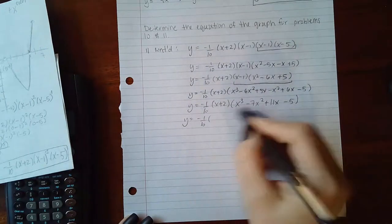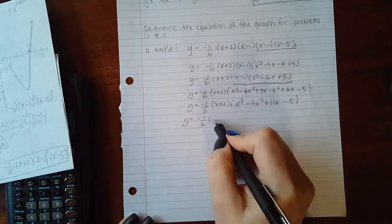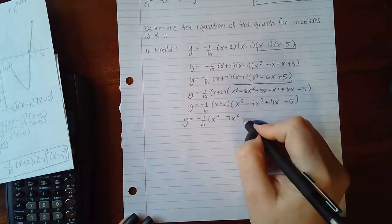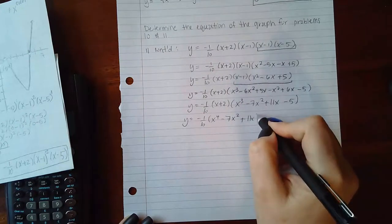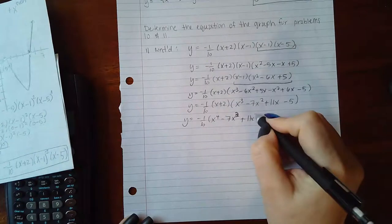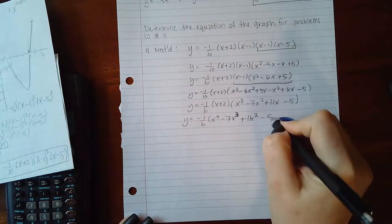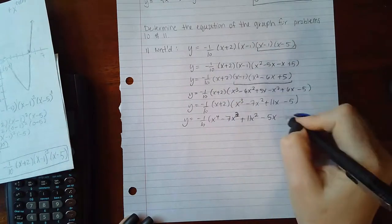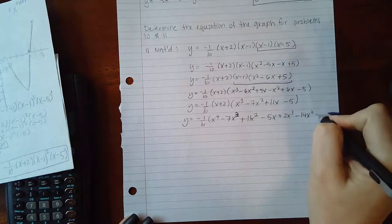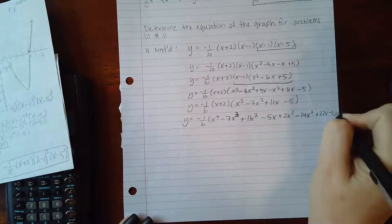Then if I multiply this factor in, I end up with x to the fourth minus 7x cubed plus 11x squared minus 5x, and then plus 2x cubed minus 14x squared plus 22x minus 10.